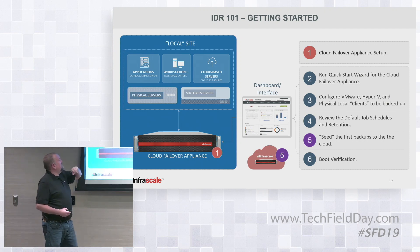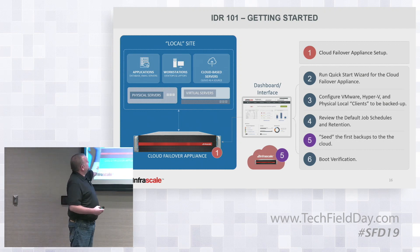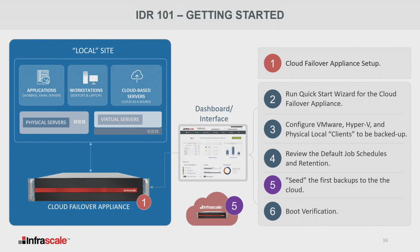This is a typical customer environment: we've got applications, workstations, physical servers, virtual servers. We can protect workstation-class OSes — I back up my laptop and desktop with this appliance. The appliance sits locally, takes in all of that data, dedupes, compresses, and encrypts it, then replicates what you want to replicate out to the secondary appliance. We're specifically going to look at configuring our first client, running a backup, and reviewing default job schedules and retention.